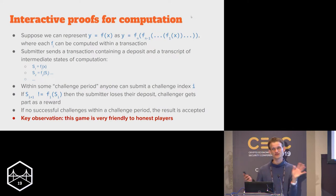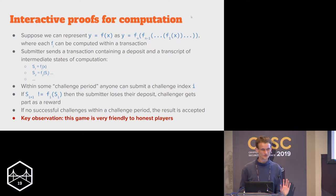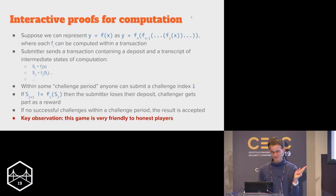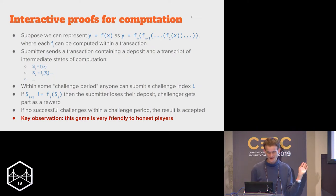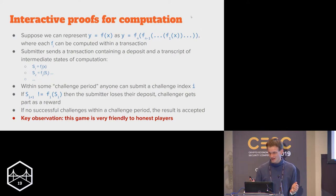So who followed this? Good. Let's talk about data availability. This game is very friendly to the challenger and unfriendly to bad submitters because it's all computation — computation is by default off-chain, verification is on-chain, computation is deterministic. So when you challenge, you know you're going to win.